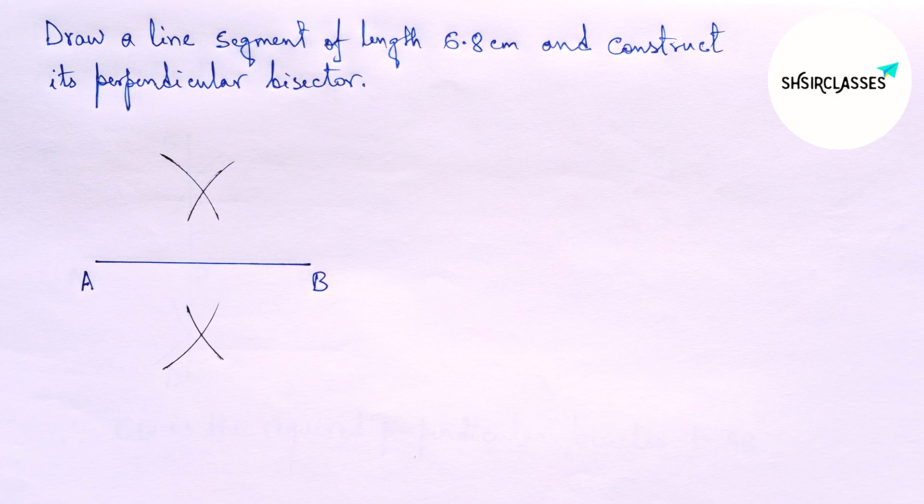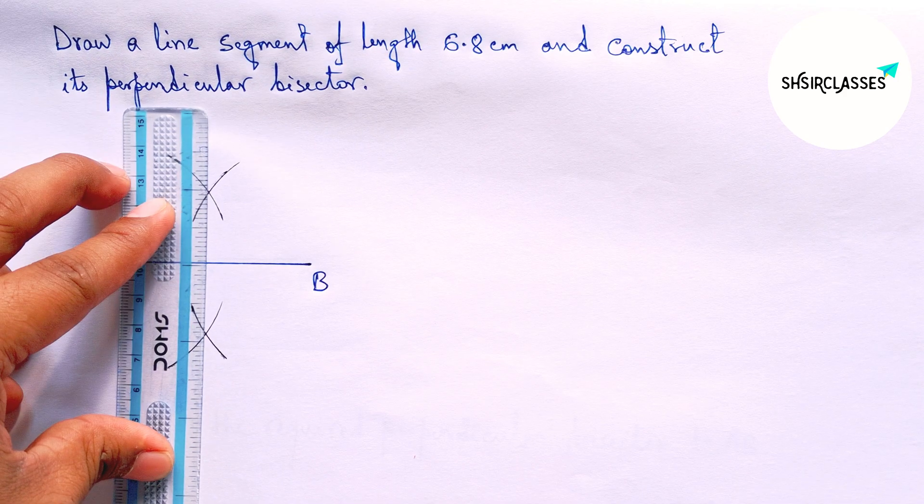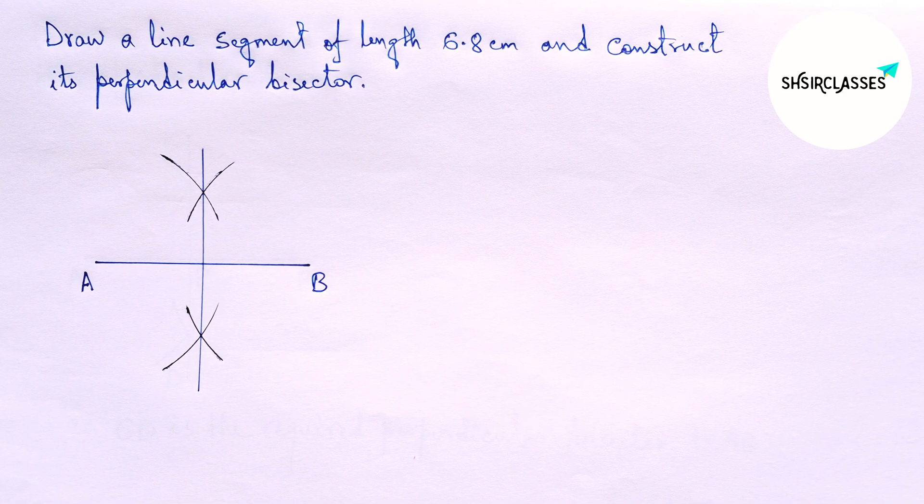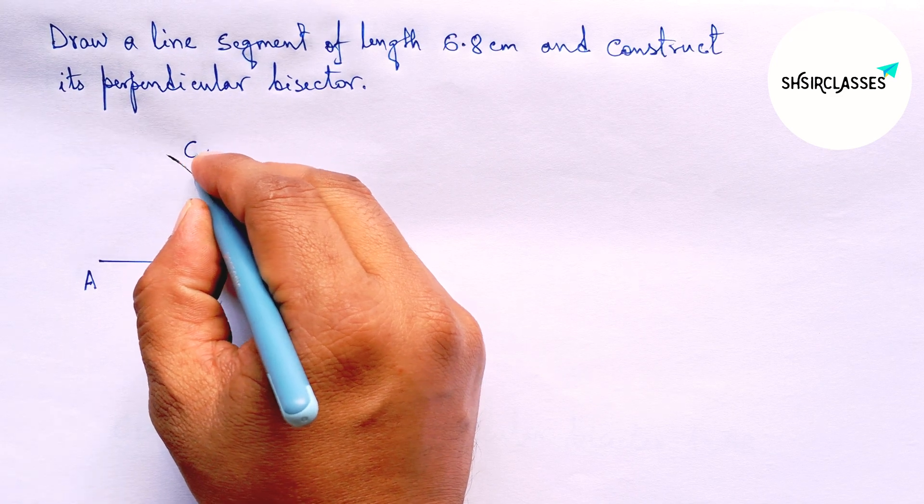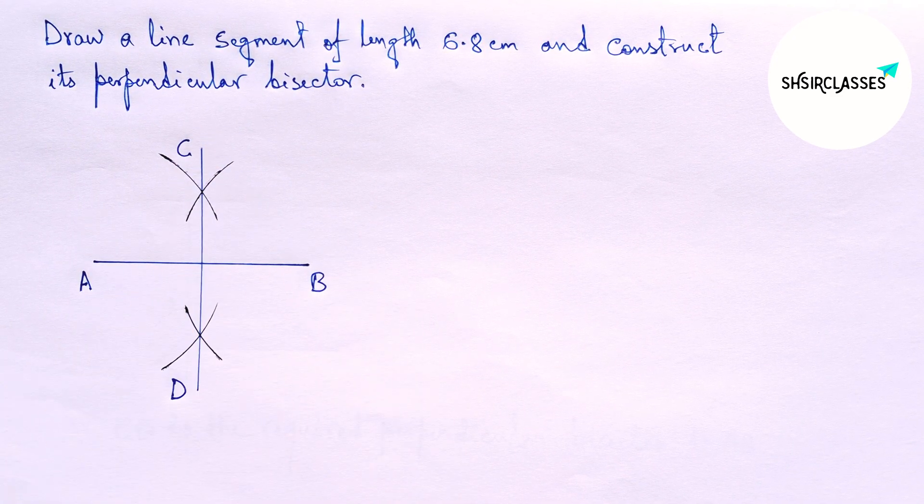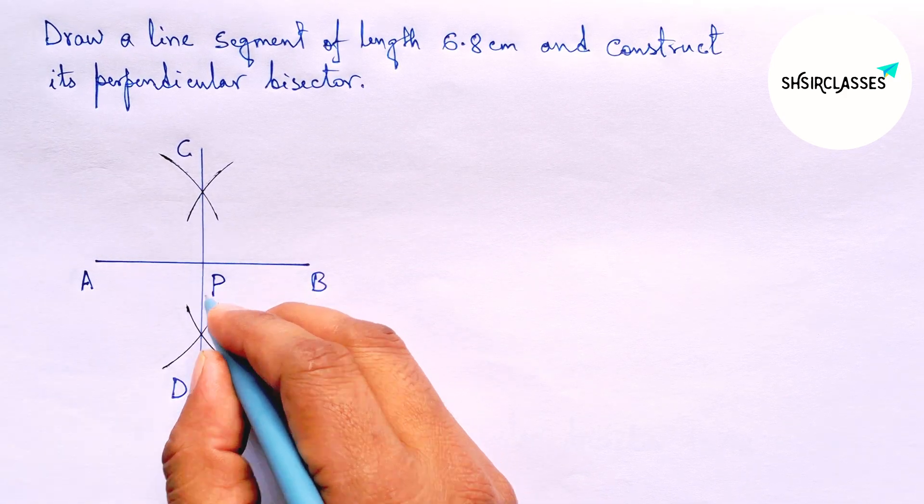Okay. Now, joining this and this is the required perpendicular bisector. So labeling here C and D. AB and CD both intersect here at a point.